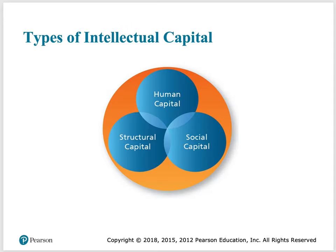So what are the types of intellectual capital? We have human capital, structural capital, and social capital. Human capital is the competencies and knowledge of the organization's employees. Social capital is the number and quality of the relationships the organization's employees maintain. And structural capital is the knowledge and stored documentation about the business.